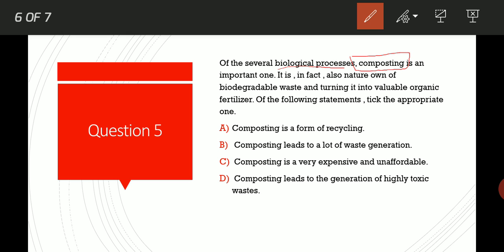There are two types of processes: non-biodegradable and biodegradable. Biodegradable is the process in which the waste is converted into valuable organic material by nature itself. But in non-biodegradable process, things such as plastics, polythene, etc. are included. Of the following statements, take the appropriate one.